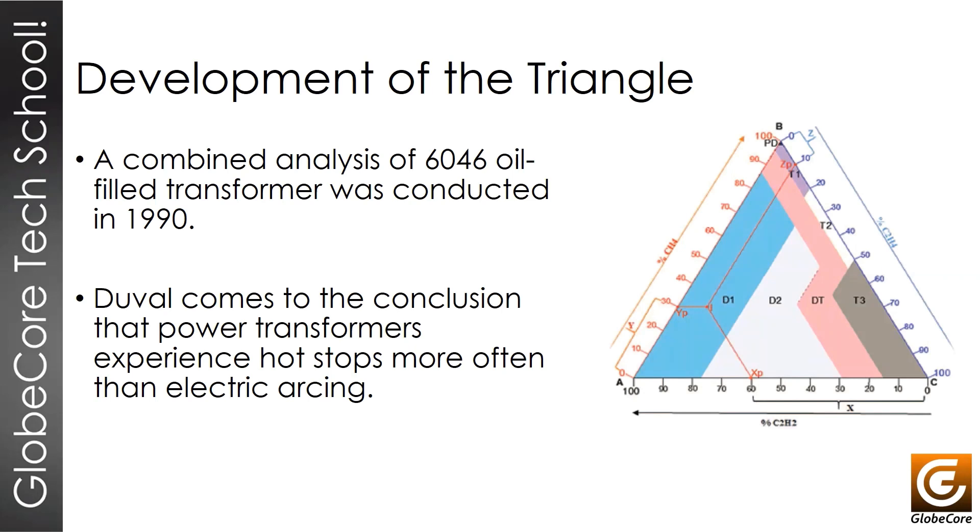The triangle is equilateral. Each side has calibration. It's calibrated from 0 to 100, and that would be the percentage concentration of those three gases. Each side of the triangle signifies a specific gas, calibrated from 0 to 100, indicating the percentage.